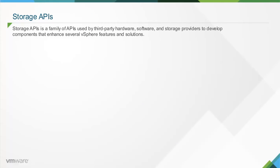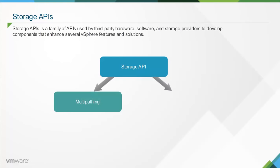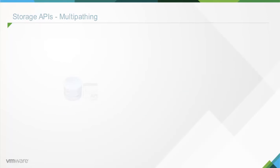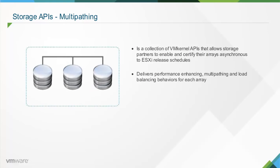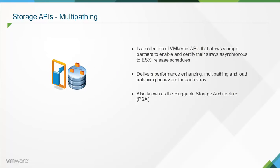Storage APIs is a family of APIs used by third-party hardware, software, and storage providers to develop components that enhance several vSphere features and solutions. Virtual SAN 6.0 supports storage APIs such as Storage APIs Multipathing and Storage APIs Storage Awareness. Storage APIs Multipathing is a collection of VMkernel APIs that allows storage partners to enable and certify their arrays asynchronously to ESXi release schedules, as well as deliver performance-enhancing multipathing and load-balancing behaviors optimized for each array. Storage APIs Multipathing are also known as the Pluggable Storage Architecture, or PSA.